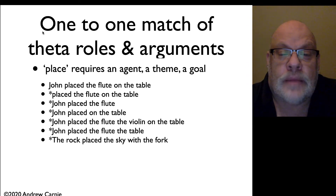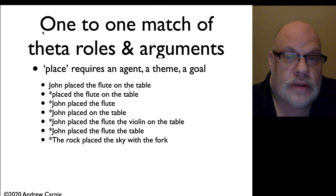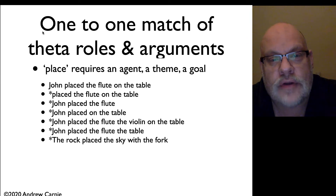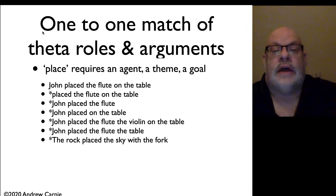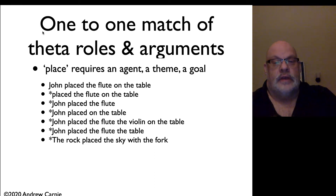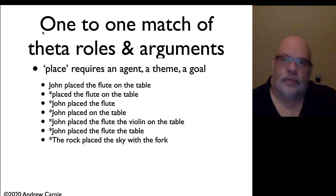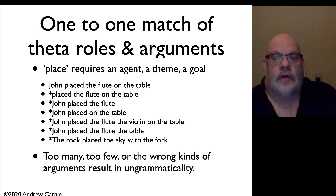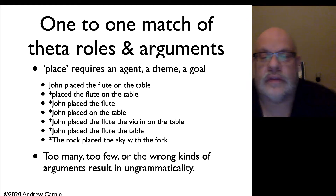I do want to say one thing about John placed the flute, the violin on the table. Many of you will say, but what about John placed the flute and the violin on the table? This is not a counterargument because when you join two things together, they become a single item. John placed the flute and the violin — you've created a complex noun phrase, the flute and the violin, which serves as the theme. So that's not a counterexample to this one-to-one matching of theta roles and arguments. Too many, too few, or the wrong kinds of arguments are going to result in ungrammaticality.